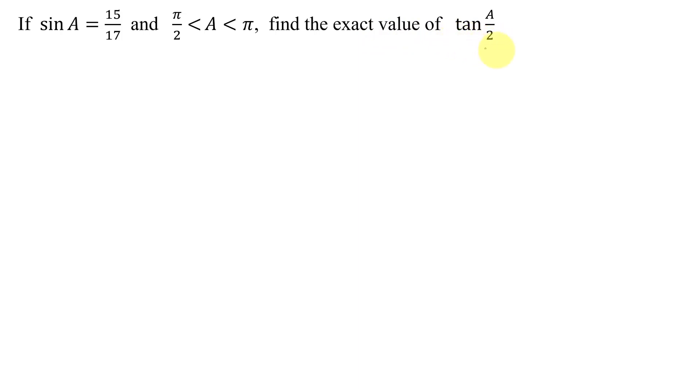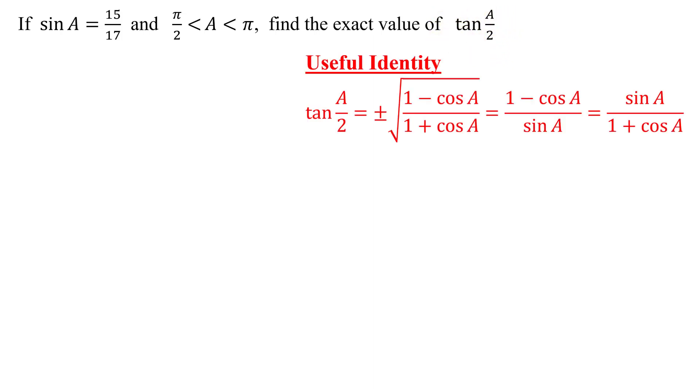I'm definitely going to need identities for the tangent of A over 2, and this identity has three different formats. Now notice, we were given the sine of angle A. Do any of these formulas just have the sine of angle A in them? No, each of them also has the cosine of A.